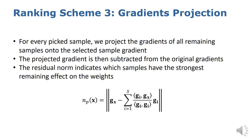The log scale in the previous approaches was used to ensure that there is enough diversity among the samples so that the network doesn't overfit on them and can generalize to unseen data. Here, we use a different method that relies on the space spanned by the gradients, where we project onto the orthogonal complement of the gradients of the selected samples. The residual we are left with indicates which samples have the strongest remaining effect on the weights after accounting for the already selected samples. We select images one by one, each time sorting them according to this measure and choosing the one with the highest norm of the residual. To pick the first sample, we choose that with the highest norm of the gradient.